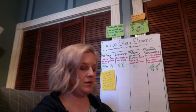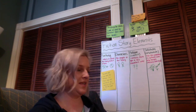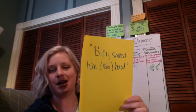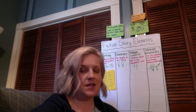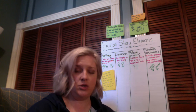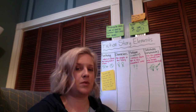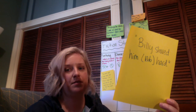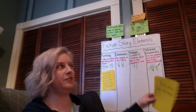Let's look at another example from Chapter 1 of Tiger Rising. 'Billy shoved him hard.' In this case, 'him' refers to Rob, our main character. Billy and Norton Tremonger would bully Rob on the bus and in the classroom. In the first chapter, one of them shoved Rob super hard. Which story element is that sentence really showing — setting, characters, problem, or solution? It's a problem. It's definitely a problem or conflict in this story.